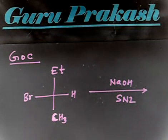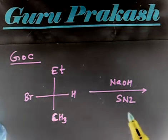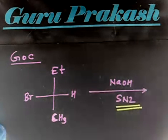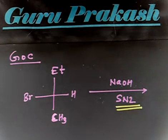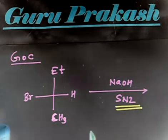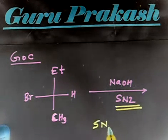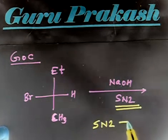So, you have to write down the product for this reaction. The condition that is given to you, that is SN2. You have to remember that the condition is SN2. So, now you see, in case of SN2, inversion takes place. So, in this reaction, inversion will take place.